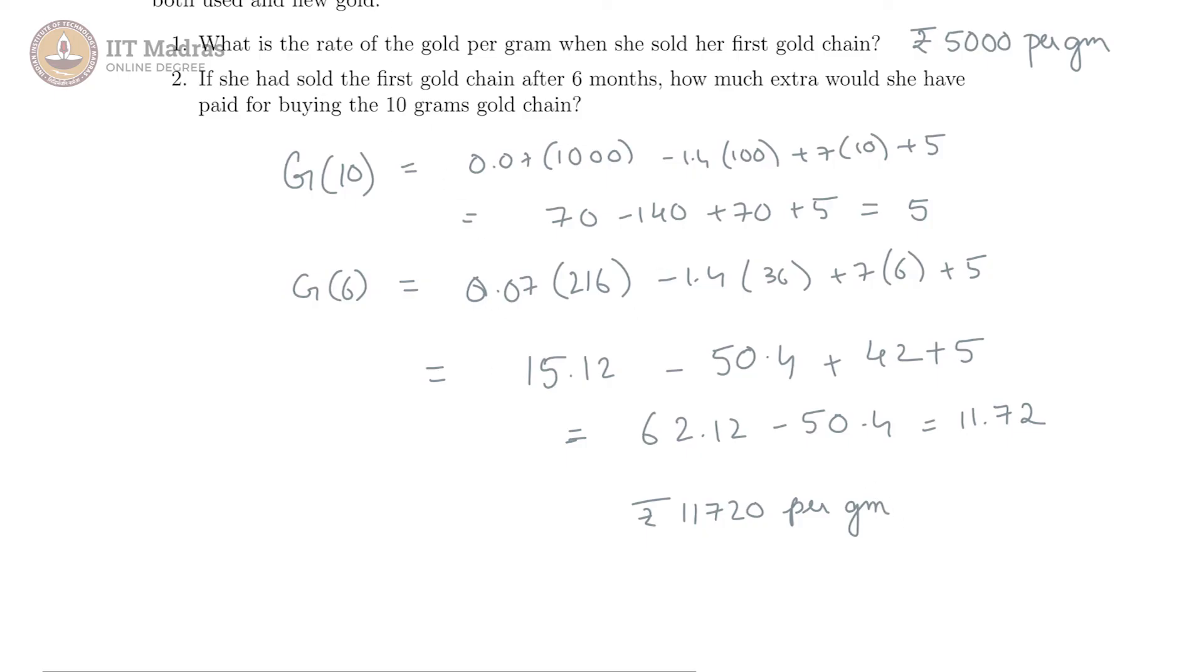And Saraswati is selling 8 grams at this price. That would mean she basically has to pay for the additional 2 grams, and that would be 2 into 11,720, which is equal to rupees 23,440. This is how much she pays extra for her 10 gram gold chain.